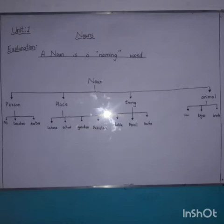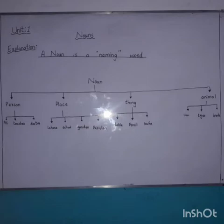The four parts are: number one, person name; number two, name of a place; number three, name of a thing; and number four, name of an animal.